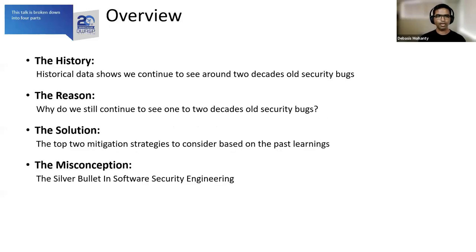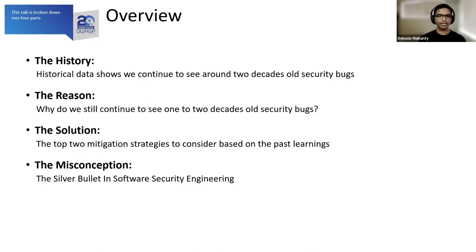This talk is broken down into four parts for easy understanding. I'll start with history to share some historical data about known security bugs. I'll provide the reason why we still continue to see one to two decades old security bugs. I'll provide a solution — not comprehensive, but the two most prominent approaches to implement so these bugs get taken care of. And finally, I'll clear some misconceptions around software security engineering.